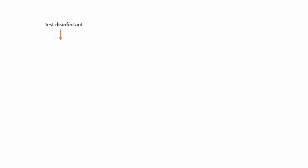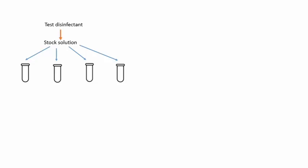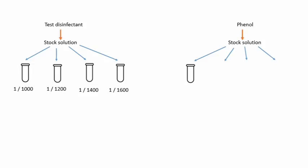Now we come to the procedure of the phenol coefficient test. Sabse pehle jo test disinfectant hai uska ek fix concentration ka stock solution prepare karte hain. Phir is stock solution ka use karke alag-alag dilution ke solutions bana lete hain test chemical ke, aur alag-alag test tubes mein fill kar lete hain — 5 ml each. Jaise test disinfectant ke chaar dilutions prepare kiye: 1/1000, 1/1200, 1/1400, aur 1/1600 — yani ek part disinfectant aur 1000, 1200, 1400, aur 1600 parts hard water. Isi tarah same procedure phenol ke saath bhi repeat karte hain, jo experiment mein standard hai.